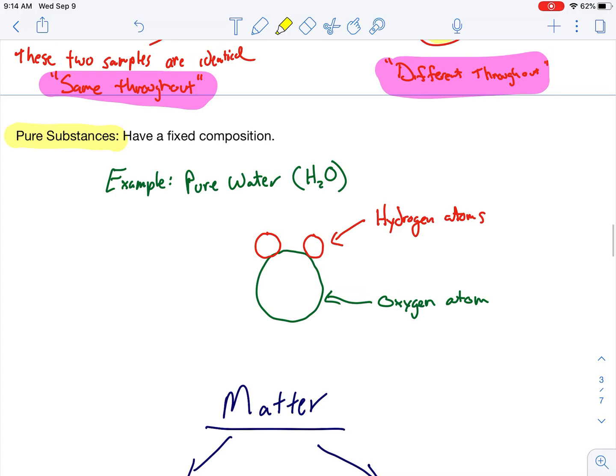The other half of how to classify matter are called pure substances. If it's not a mixture, it's going to be a pure substance. Things that have a fixed composition are pure substances. There are two types of them, elements and compounds. Here we have an example of a compound, H2O. This is a nice little drawing of what water looks like. I would expect you guys to be able to draw water at the blink of an eye. We have two hydrogen atoms, one oxygen atom. That's how they fit together.